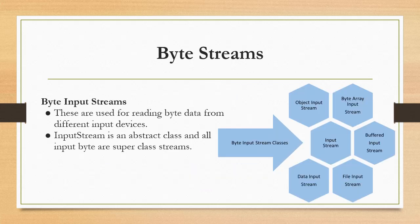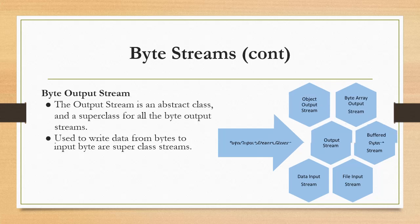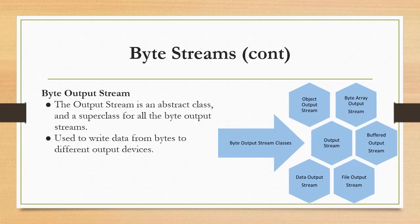Byte streams — the byte stream is the super class of byte input stream. The byte input stream contains classes like InputStream, ObjectInputStream, ByteArrayInputStream, BufferedInputStream, FileInputStream, and DataInputStream. These classes are used for reading byte data from different input devices. InputStream is an abstract class and the super class of all input byte streams. Byte output stream is also a sub-class of byte stream. The OutputStream is an abstract class and a super class for all the byte output streams, used to write data from bytes to different output devices.